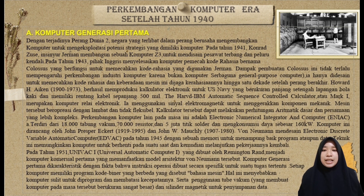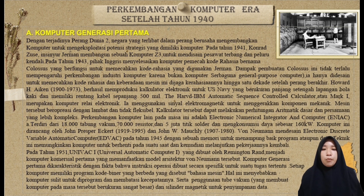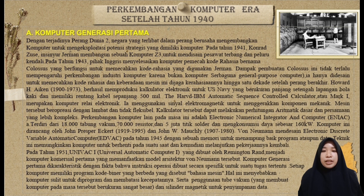Komputer ini dirancang oleh John Presper Eckert dan John W. Mauchly. Von Neumann mendesain Electronic Discrete Variable Automatic Computer pada tahun 1945, dengan sebuah memori untuk menampung baik program maupun data. Teknik ini memungkinkan komputer untuk berhenti pada suatu saat dan kemudian melanjutkan pekerjaannya kembali. Pada tahun 1951, UNIVAC atau Universal Automatic Computer yang dibuat oleh Remington Rand, menjadi komputer komersial pertama yang memanfaatkan arsitektur Von Neumann tersebut.